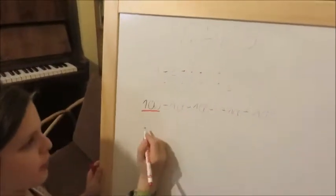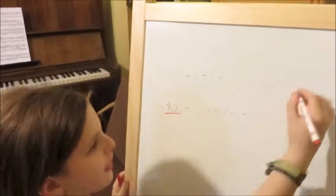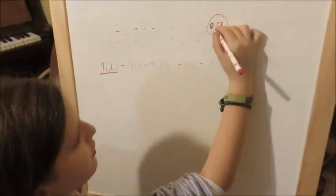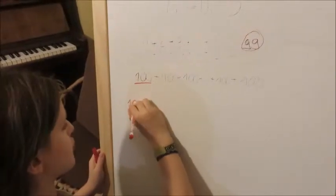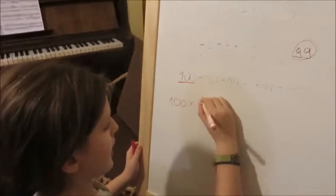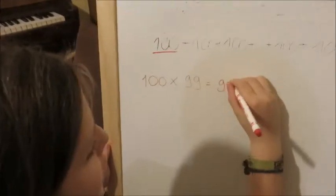So we have 100, but what do we do with that? How many of them are there? There are 99 of them. And that's why we are going to write 100 times 99, which equals 9,900.